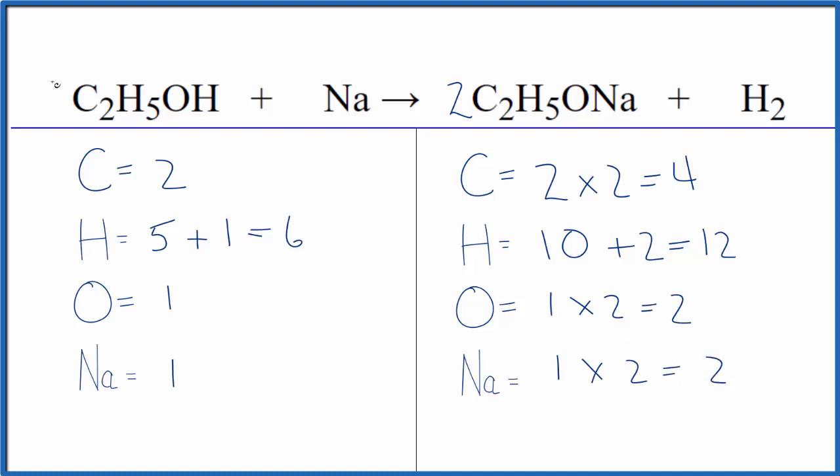Now, it looks like if I put a two here in front of the ethanol, two times two, that would give me four. Let's update this. Two times five, that's the 10, and then two times the one here. That'll give me 12. We've balanced the hydrogens. Two times the one, we have two oxygens.